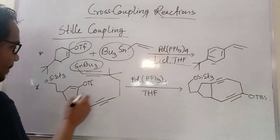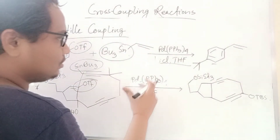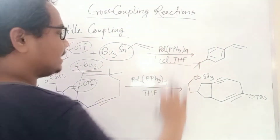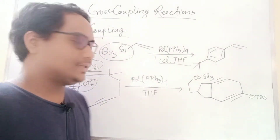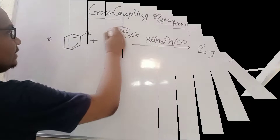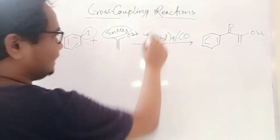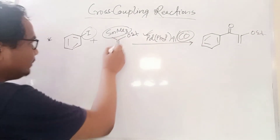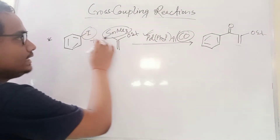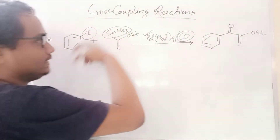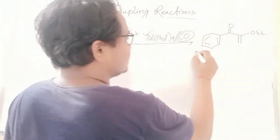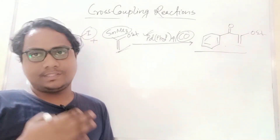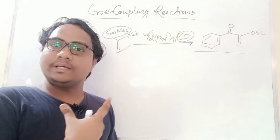In a total synthesis application: where the tin part is there and OTf is there, they join in the presence of palladium. Wherever you see the tin part and halide part, they couple in the presence of palladium. In another variant, instead of a normal alkyl halide you use carbon monoxide — palladium inserts CO between the alkyl halide and the tin, so a carbonyl is inserted — giving a keto product.